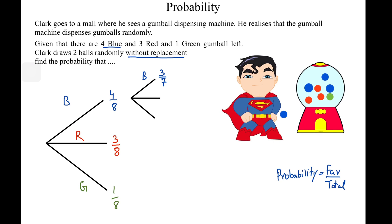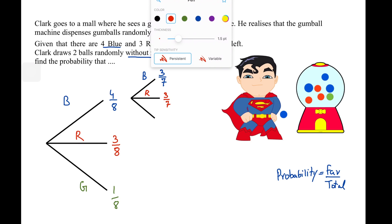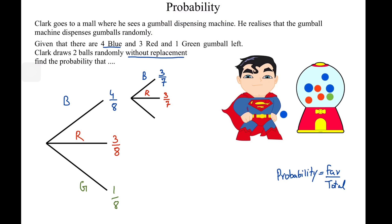Since we're drawing without replacement, once he draws one gumball he can't put it back — that would be cheating. The number of red has remained three but the total is now seven, so red is 3 over 7. Green has remained at one, so green is 1 over 7. That covers the second draw assuming the first was blue.